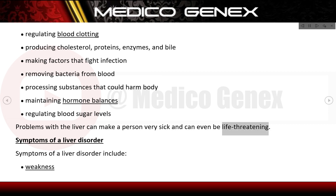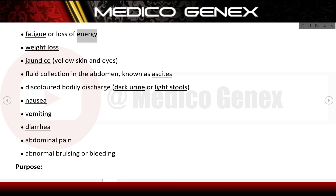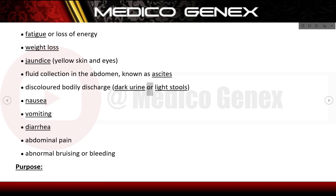Symptoms of a liver disorder include weakness, fatigue, loss of energy, weight loss, jaundice with yellow skin and eyes, fluid collection in the abdomen known as ascites, discolored bodily discharge such as dark urine or light stools, nausea, vomiting, diarrhea, abdominal pain, and abnormal bruising or bleeding.